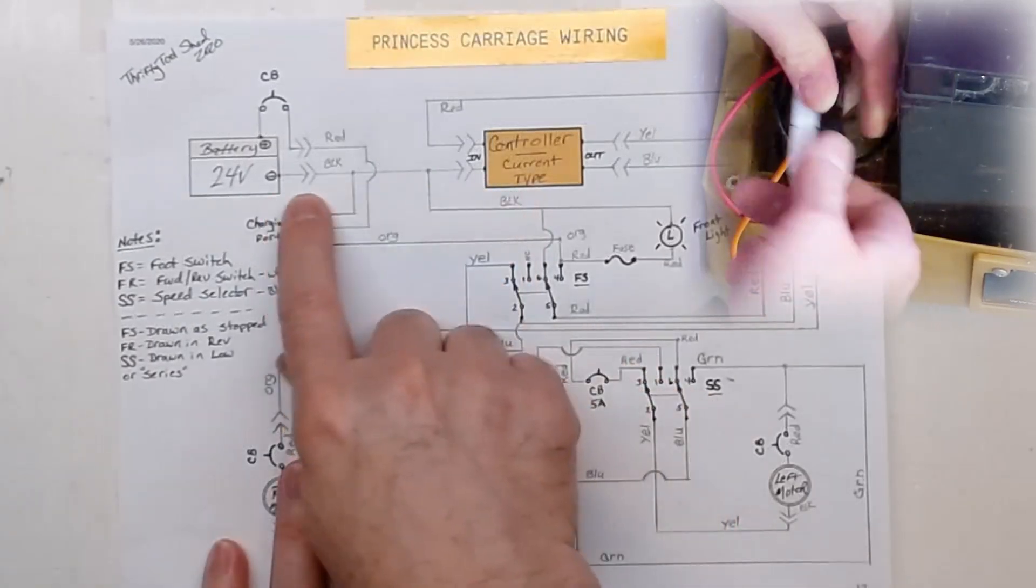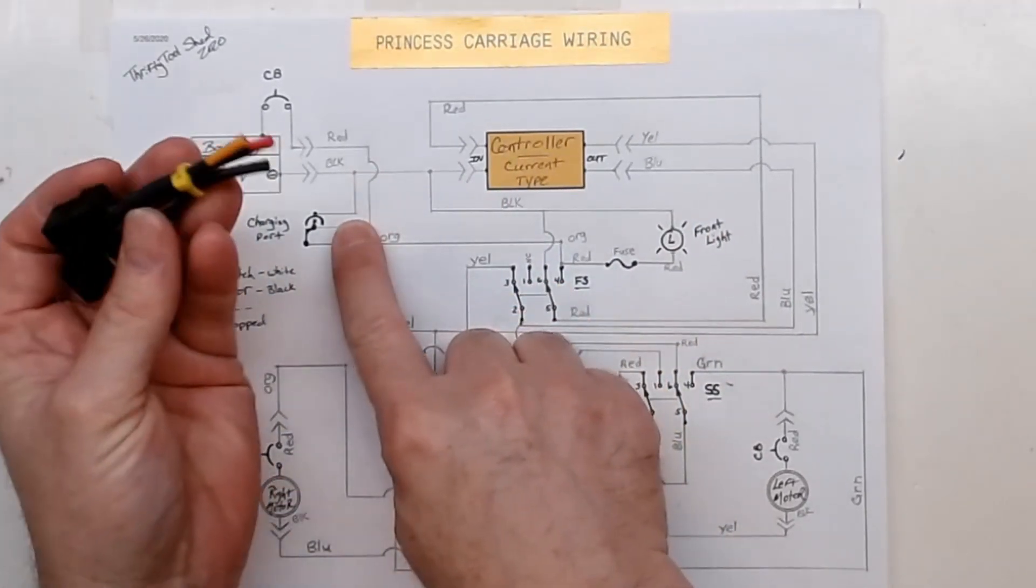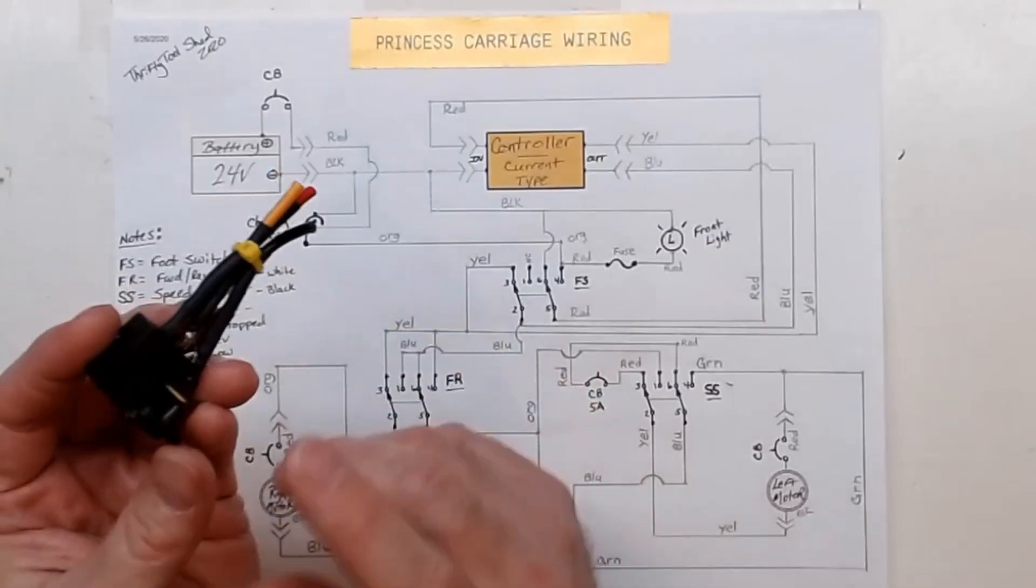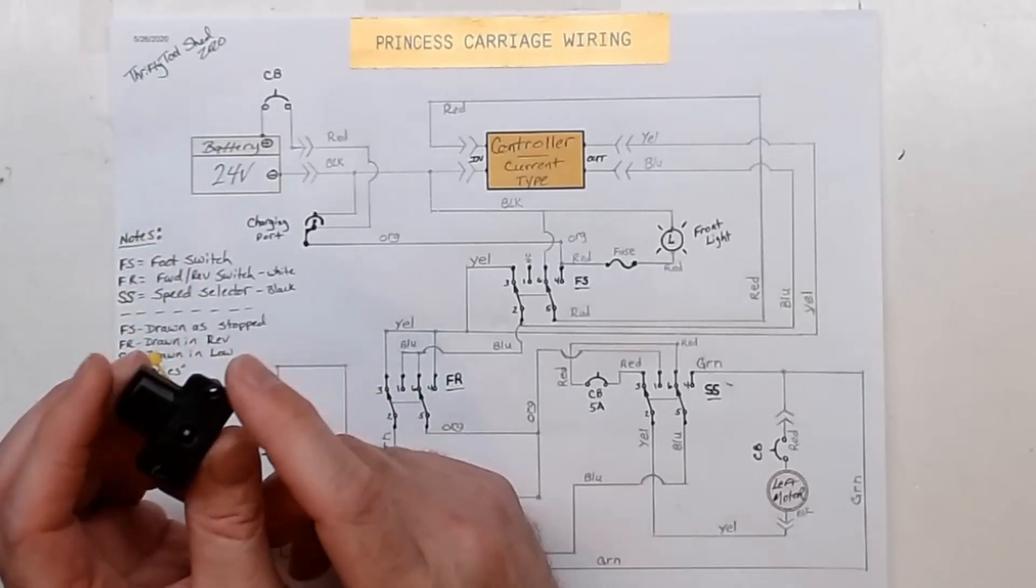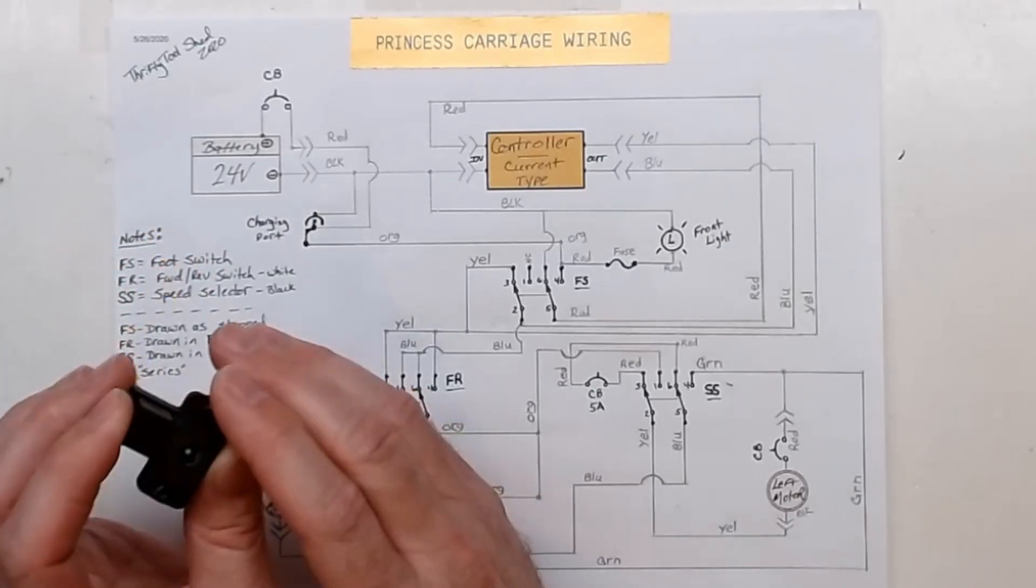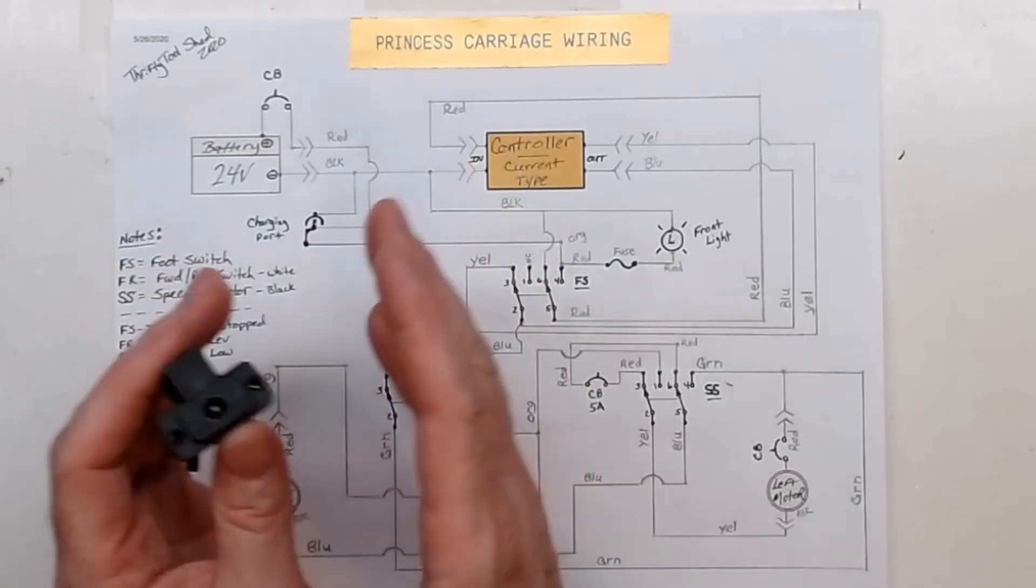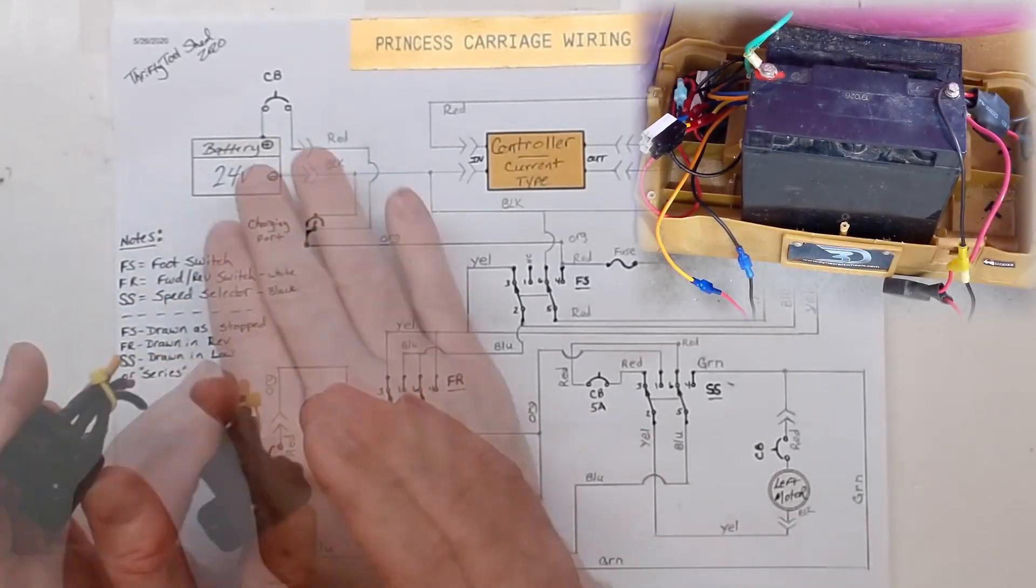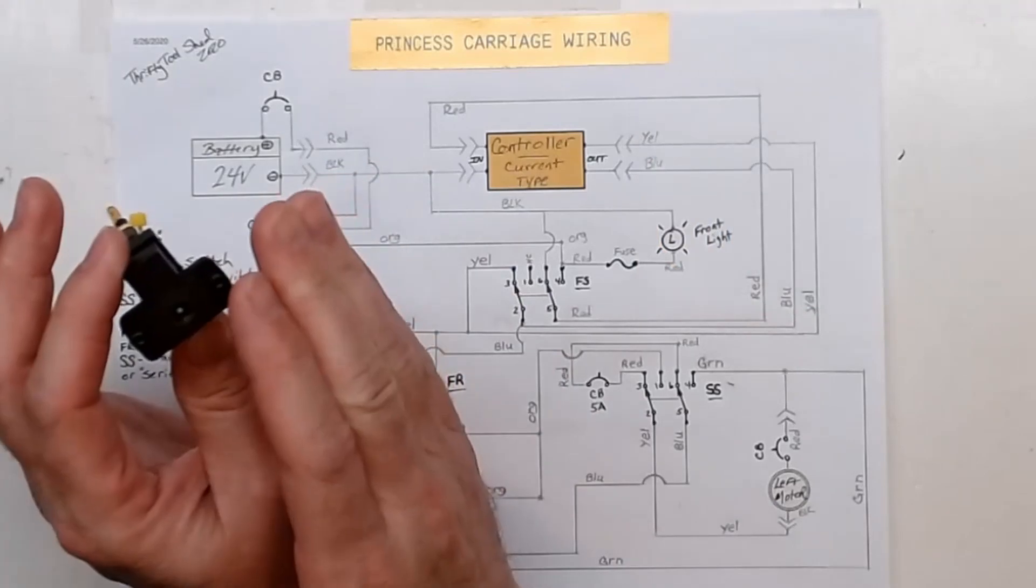The black also comes down to the charging port, which I have cut off of this one. This charging port could cause some issues too. The owner has already bypassed this because he charges with a 12 volt charger on two different batteries, charging them individually and using two in series for 24 volts.